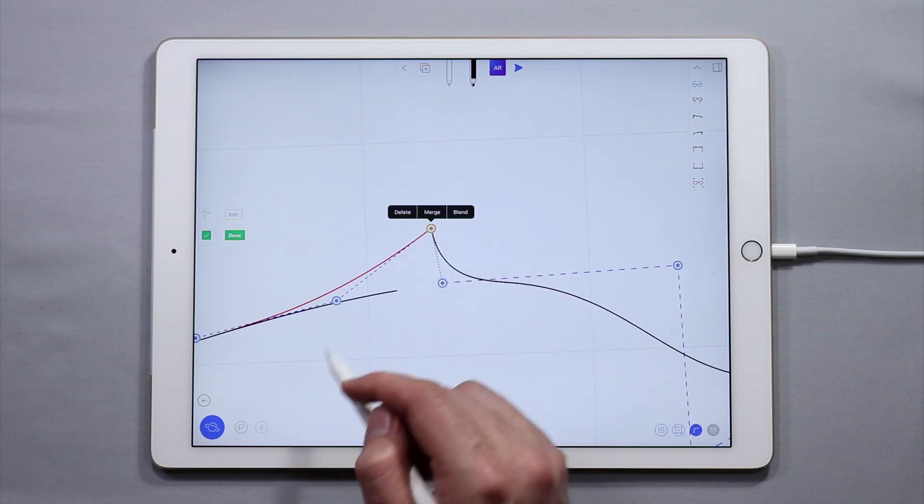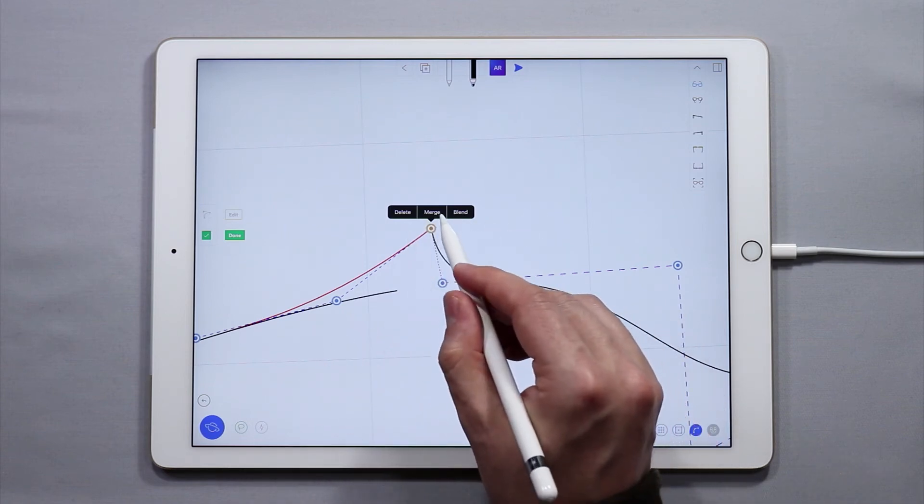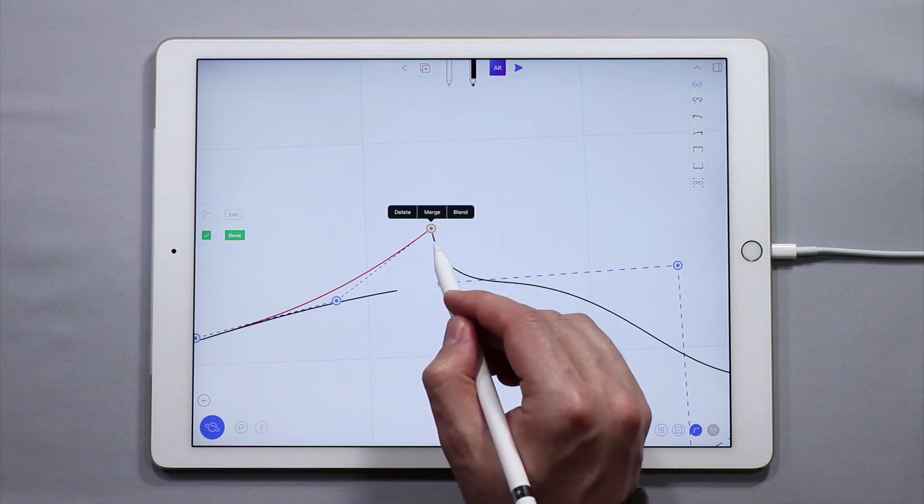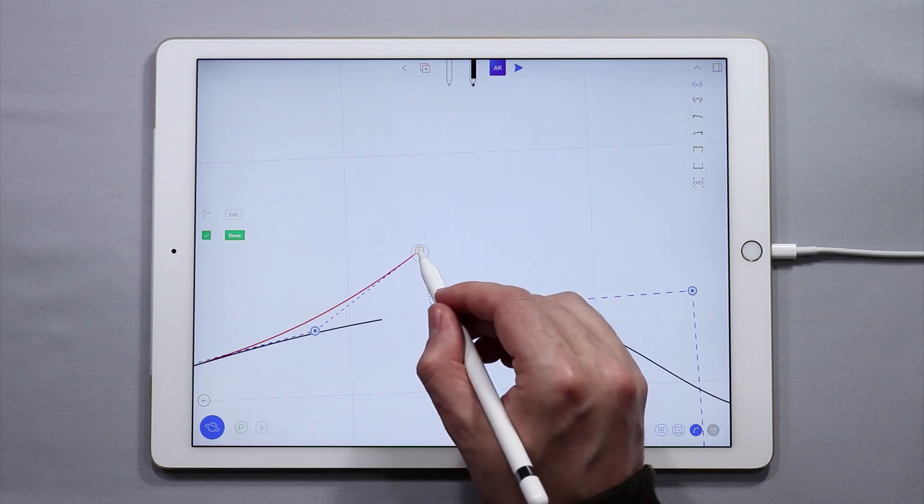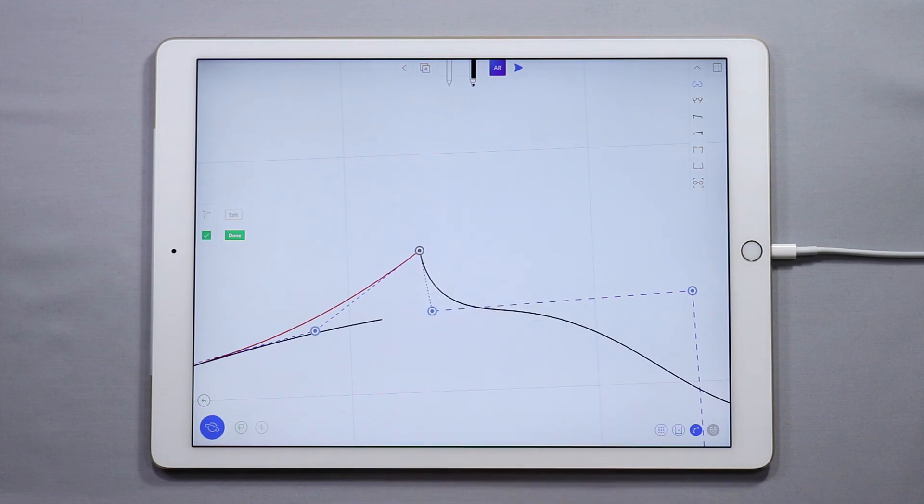If I let up I have the option to either merge or blend these points together. If I merge them that point will basically become one of the dark blue points. So I'm going to merge that. There we go.